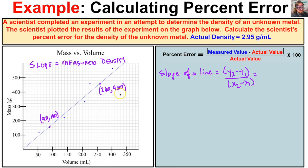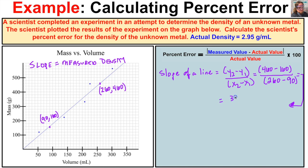Now that we have these two points, we can determine the slope of this line. We'll take y2 minus y1: that's 460 minus 160, divided by x2 minus x1: that's 260 minus 90. So 460 minus 160 equals 300, and 260 minus 90 equals 170. Then we put 300 divided by 170 into our calculator.